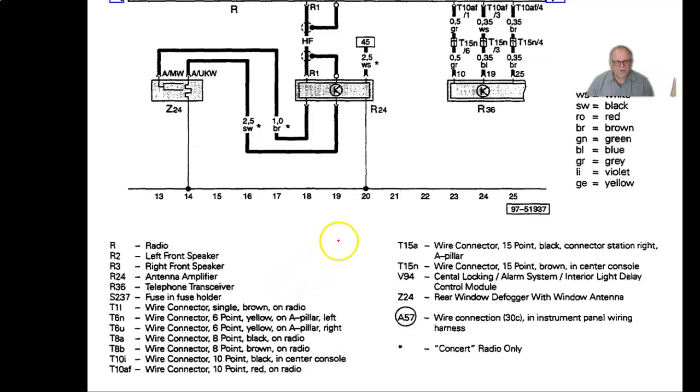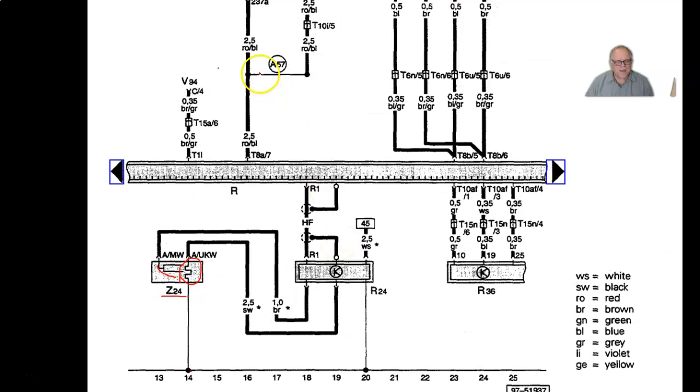Let's start with the wire. Coming back up here we have our RO slash BL. Which RO is red, BL is blue. This is going to be a red wire with a blue stripe. These abbreviations are based on the German word for it.